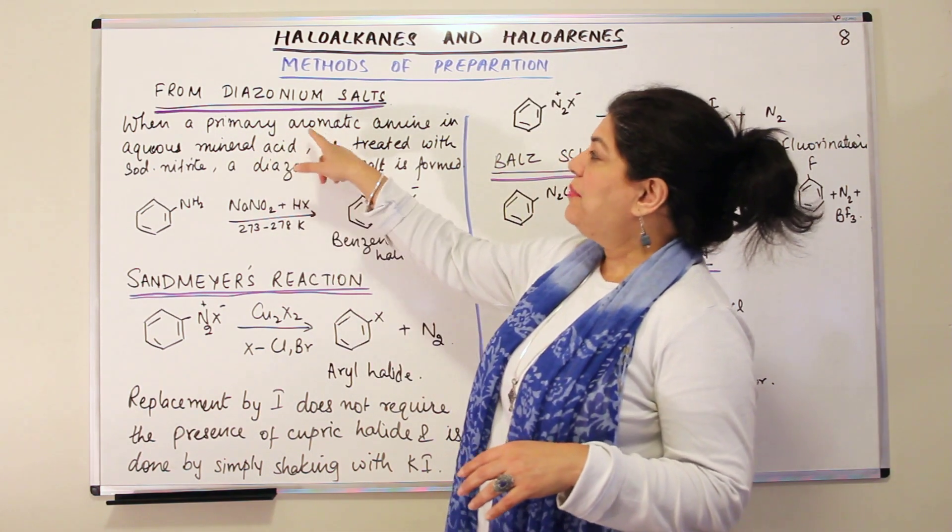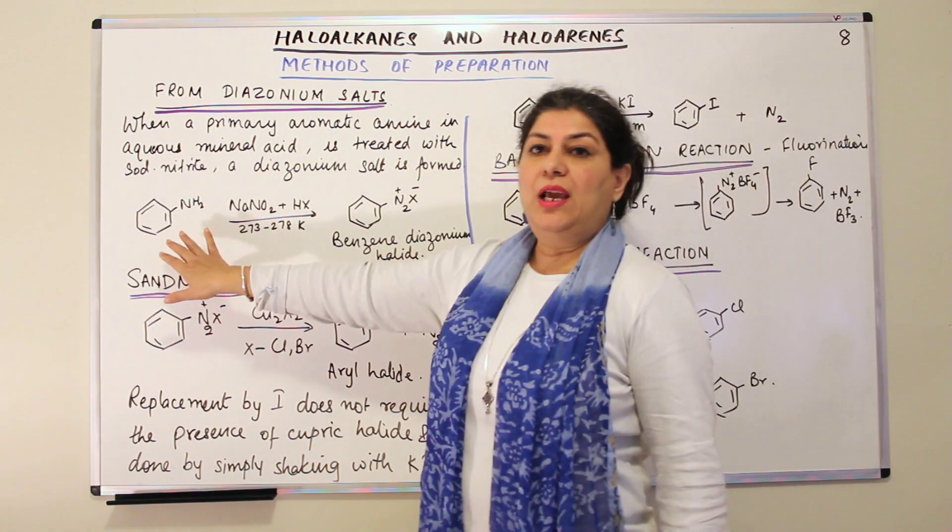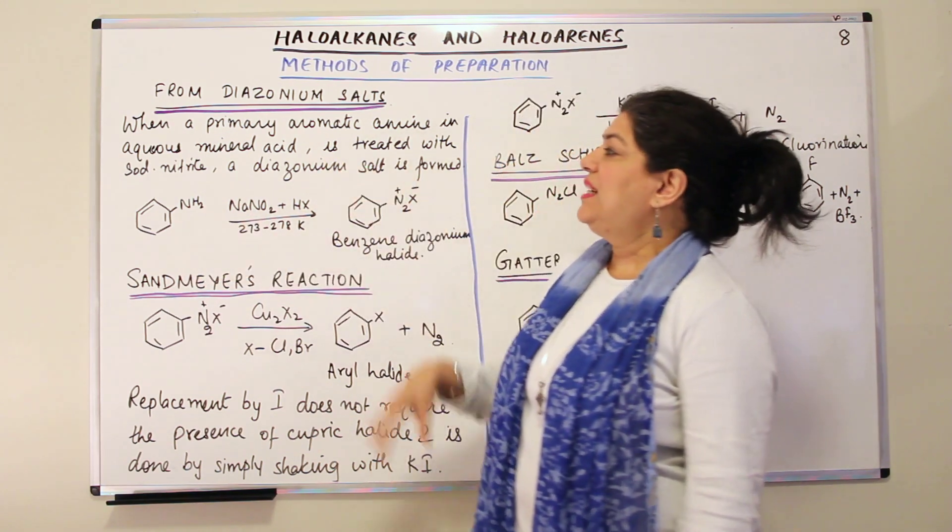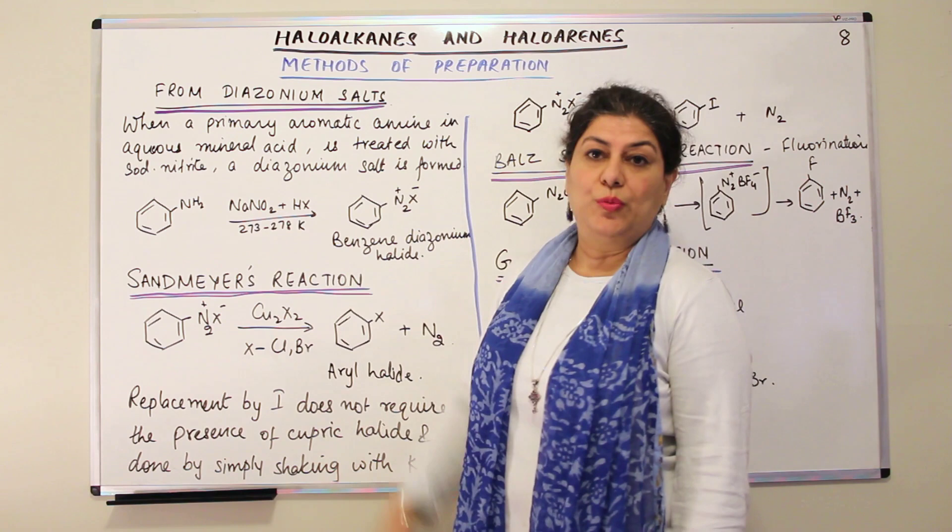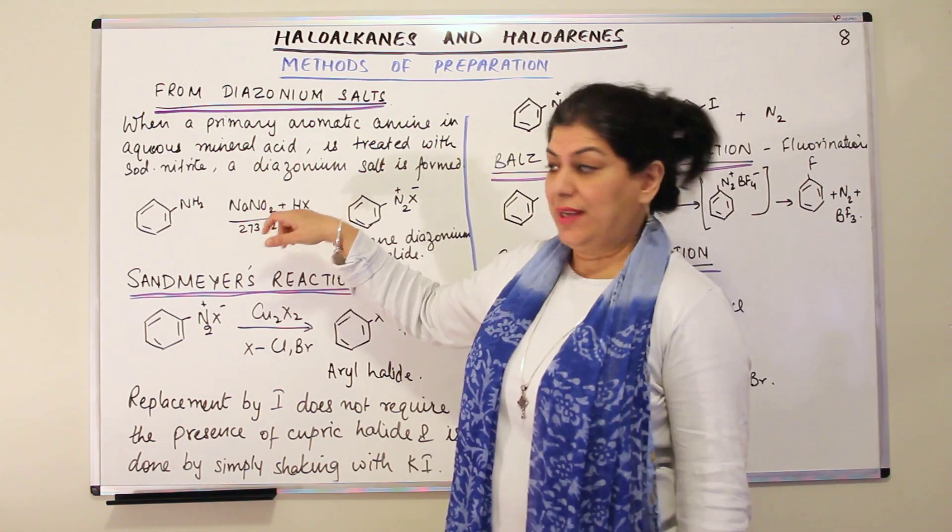A diazonium salt, when a primary aromatic amine in aqueous mineral acid is treated with sodium nitrite. What is sodium nitrite? NaNO2 in the presence of a mineral acid like HX.